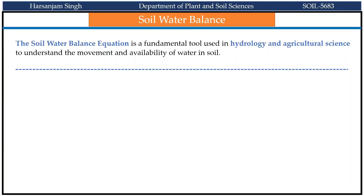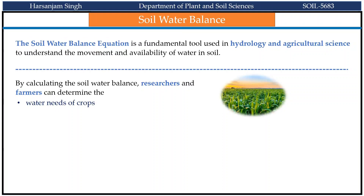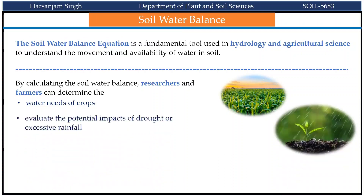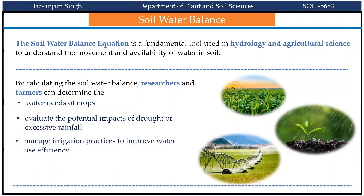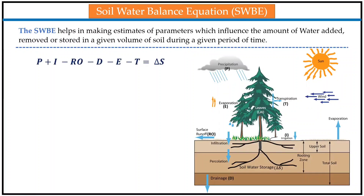Soil water balance is a concept used to describe the movement and distribution of water within the soil system. The soil water balance equation is a fundamental tool used in hydrology and agricultural sciences to understand the movement and availability of water in soil. By calculating the soil water balance, researchers and farmers can determine the water needs of crops, evaluate the potential impacts of drought or excessive rainfall, and manage irrigation practices to improve water use efficiency. The equation also helps in making estimates of parameters which influence the amount of water added, removed, or stored in a given volume of soil during a given period of time.